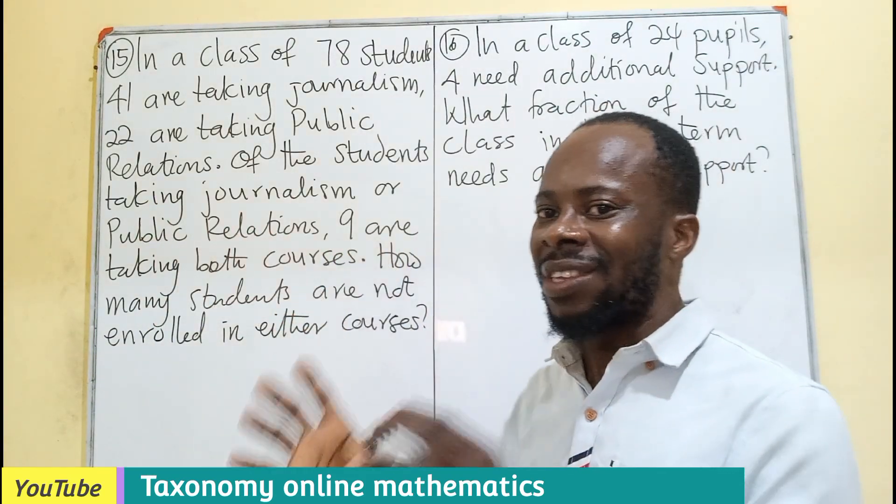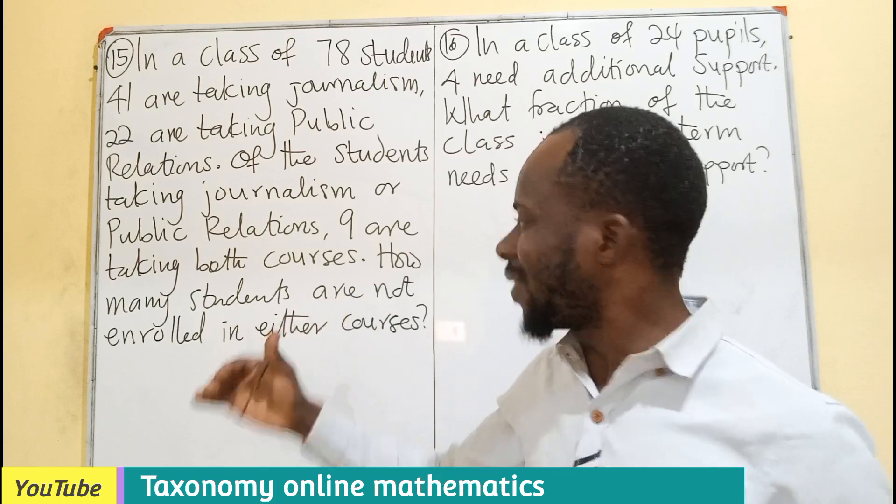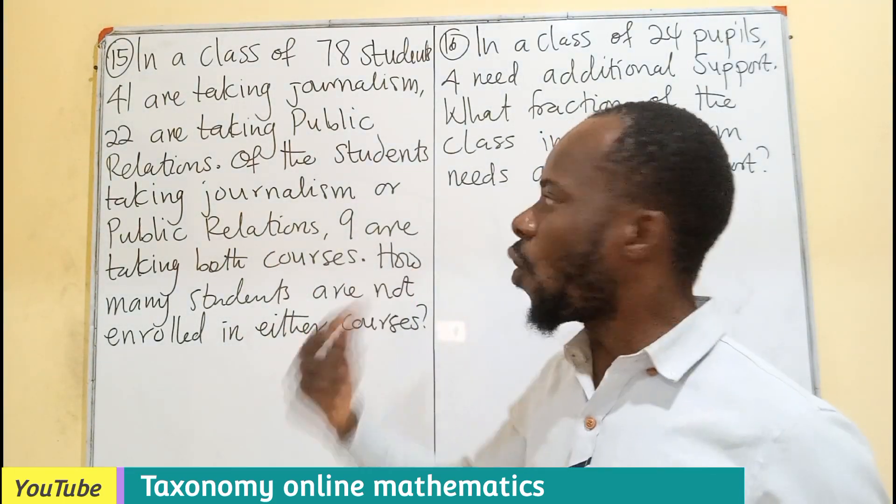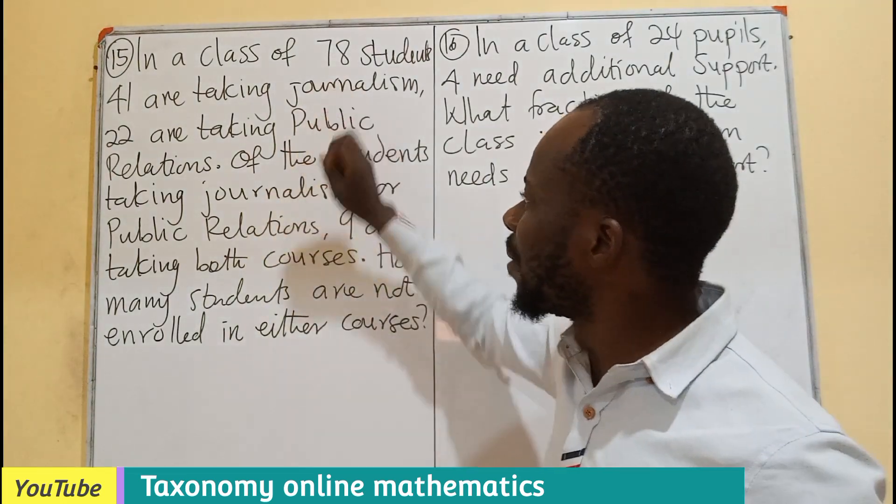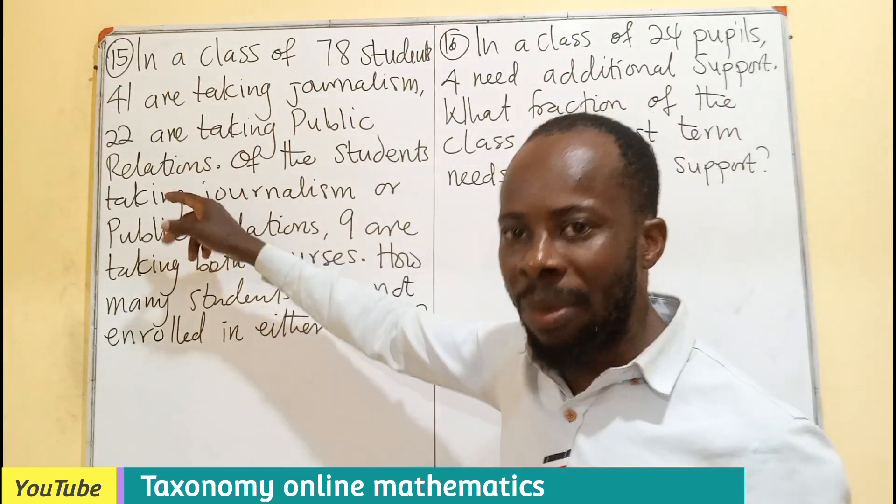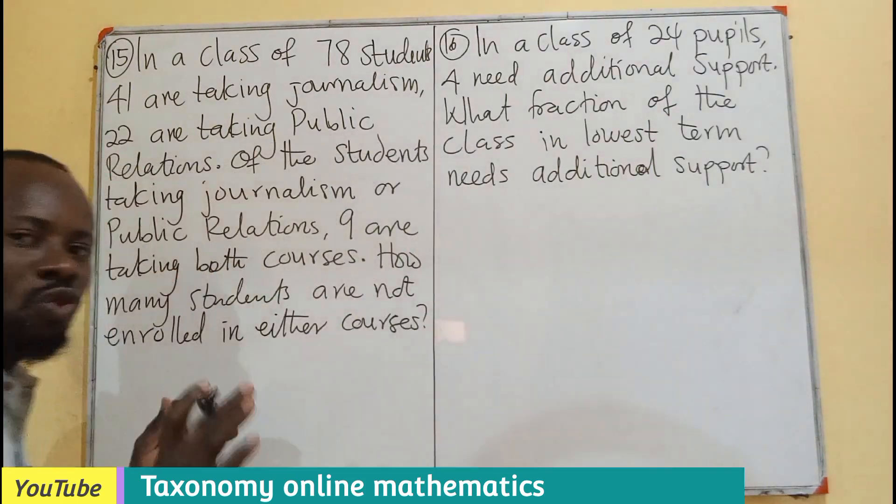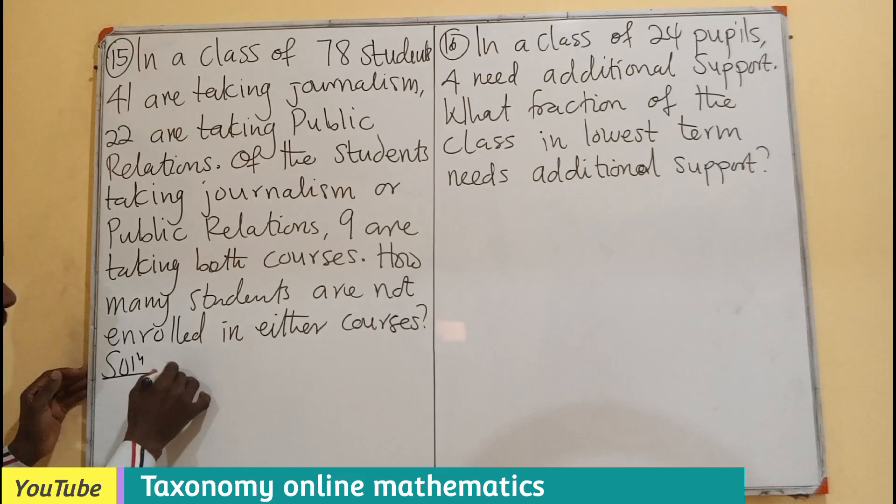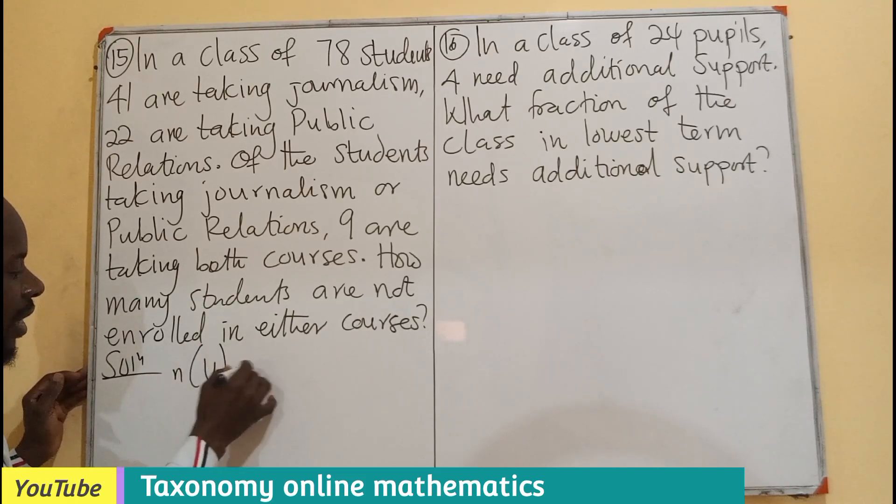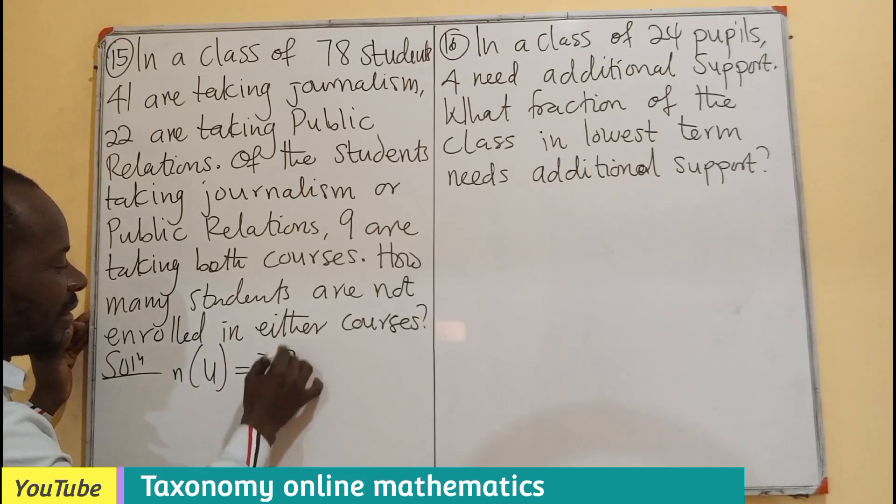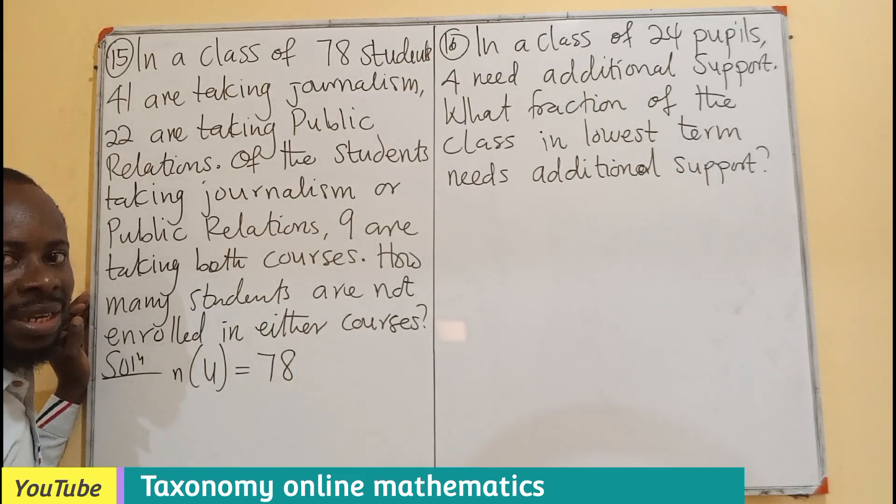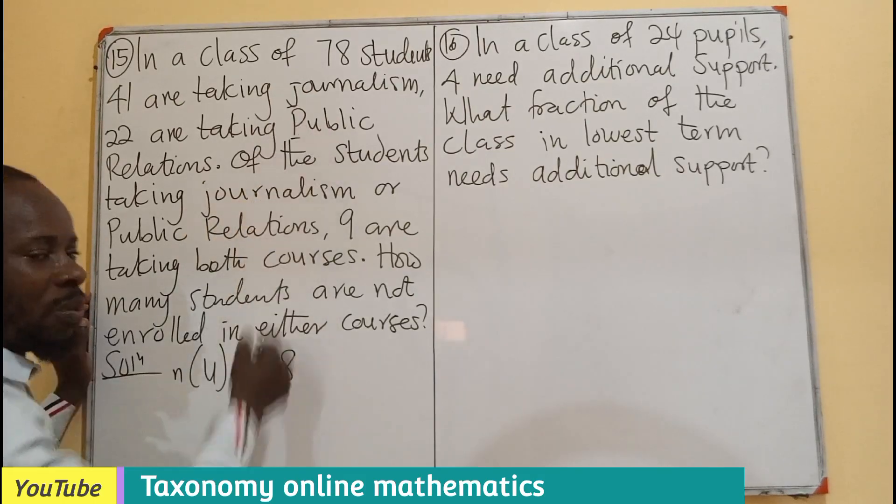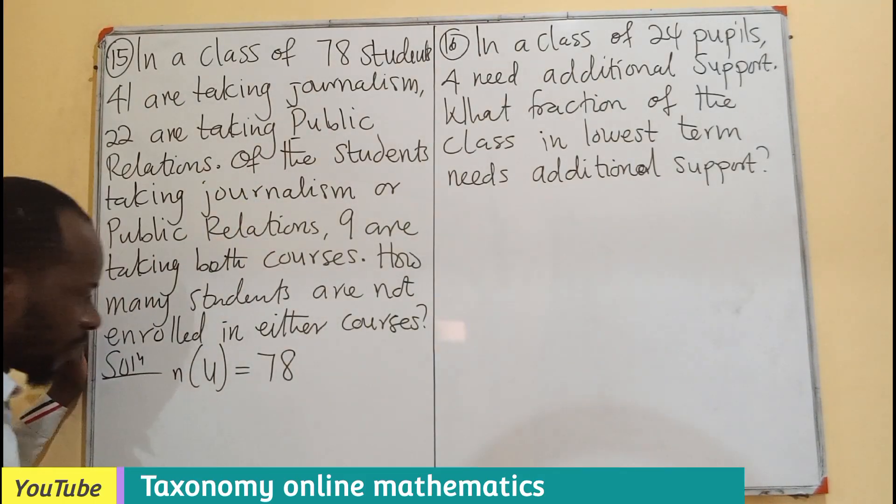If we carry this into the set situation, this is what we are looking for. What we are looking for is the complement of the set journalism and public relations. Taking U being the universal set, you will be having 78 of them being in the class.